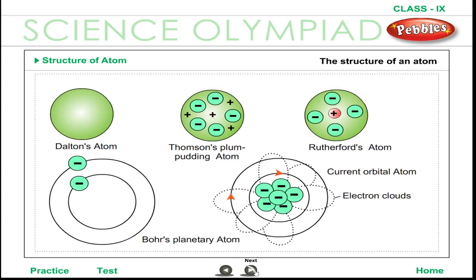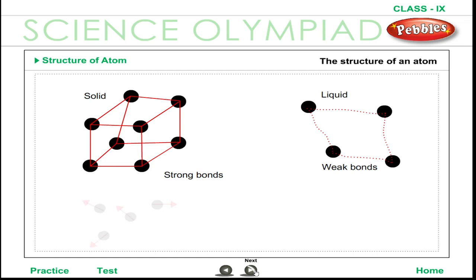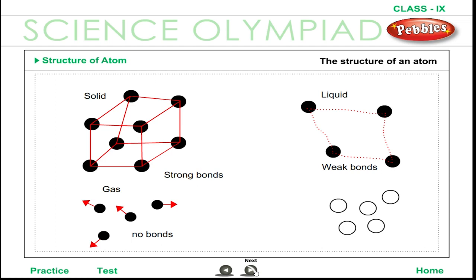The word atom is derived from a Greek word which literally means indivisible. According to Dalton's Atomic Theory, the atom was indivisible and a neutral particle. But Dalton's model of the atom could not explain how electricity could interact with matter. The discovery of electricity motivated research that led to the modern concepts of the atom.